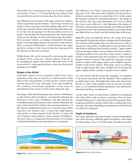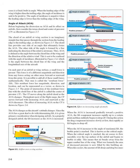Angle of Incidence: The acute angle the wing chord makes with the longitudinal axis of the aircraft is called the angle of incidence, or the angle of wing setting. In most cases it is a fixed, built-in angle. When the leading edge of the wing is higher than the trailing edge, the angle of incidence is positive; it is negative when the leading edge is lower than the trailing edge. Angle of Attack (AOA): Before discussing AOA and its effect on airfoils, consider the terms chord and center of pressure (CP). The chord of an airfoil is an imaginary straight line that passes through the section from the leading edge to the trailing edge.